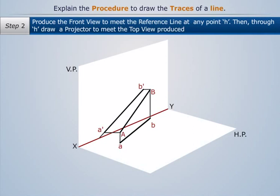So let's produce A-B-. Let's mark the point at which A-B- meets the reference line XY as H. Then, let's produce AB till it intersects the projector from point H. This line is called the horizontal trace.